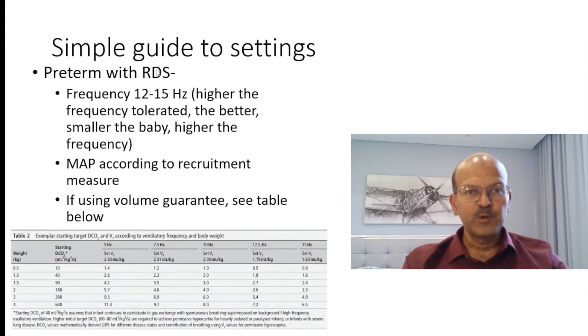A quick final review of the guide to settings. If it's a preterm baby with RDS, frequency of 12 to 15, and the higher the frequency is tolerated the better.